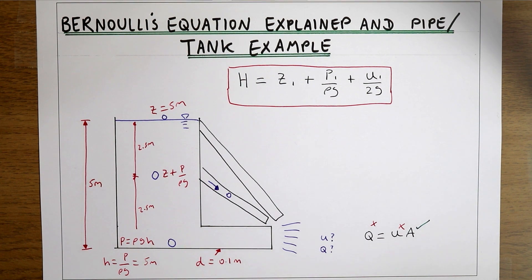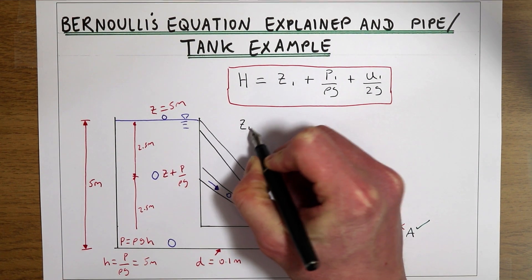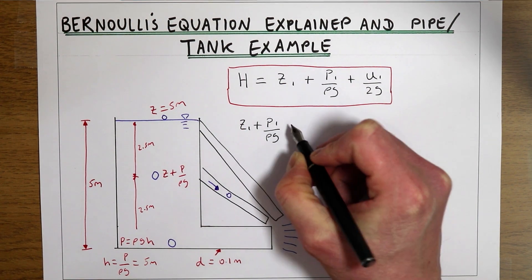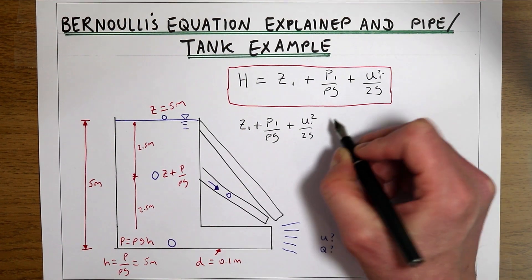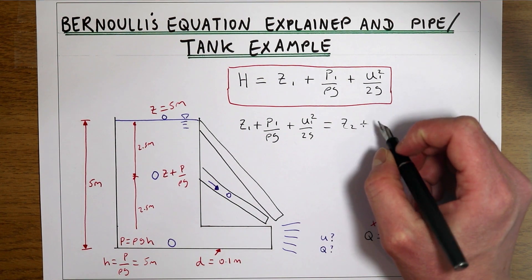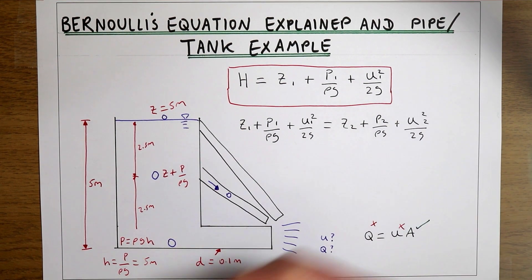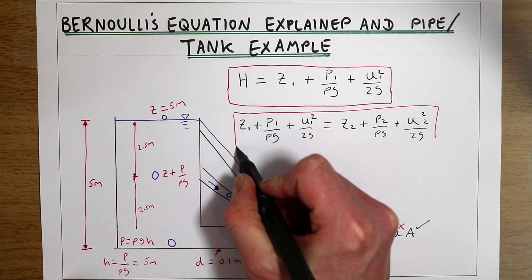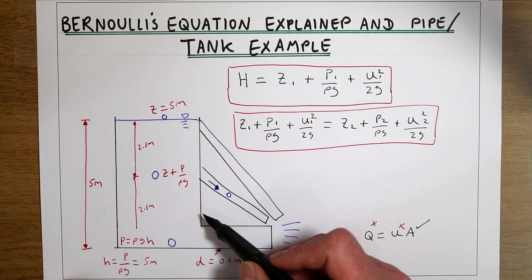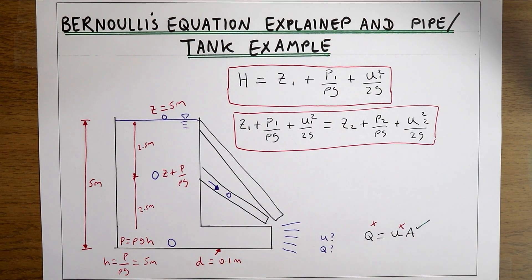Assuming conservation of energy, we can say that at one point in the tank the sum of elevation plus pressure plus kinetic energy should equal the same sum at another location. The energy is the same everywhere in the tank. Between any two points, the elevation, pressure, or velocity could be different, but the sum of all three is going to be the same at any two given points.